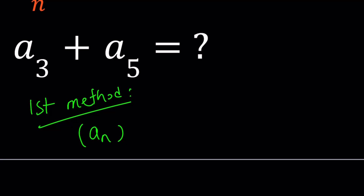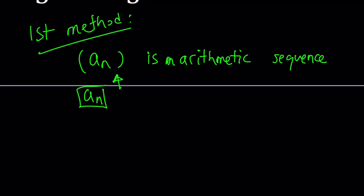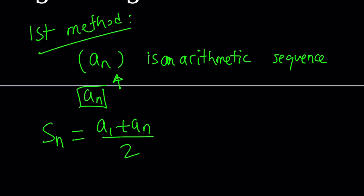When you write a sub n by itself, it just means the nth term; the whole sequence is arithmetic. If a sub n is an arithmetic sequence, then I do know the formula for the sum of the first n terms: S sub n equals (a sub 1 plus a sub n) divided by 2, times n. You average the first and last term, which gives you the equivalent value if all terms were equal.